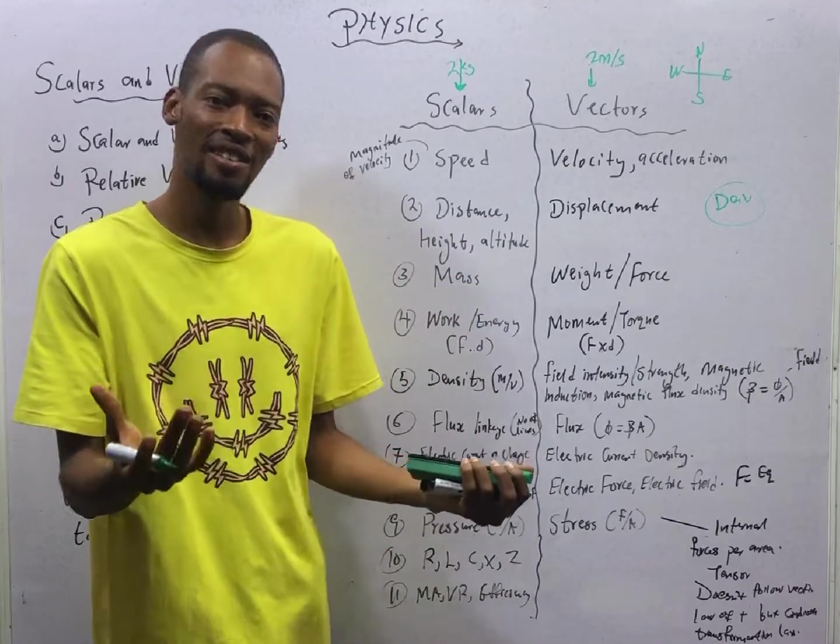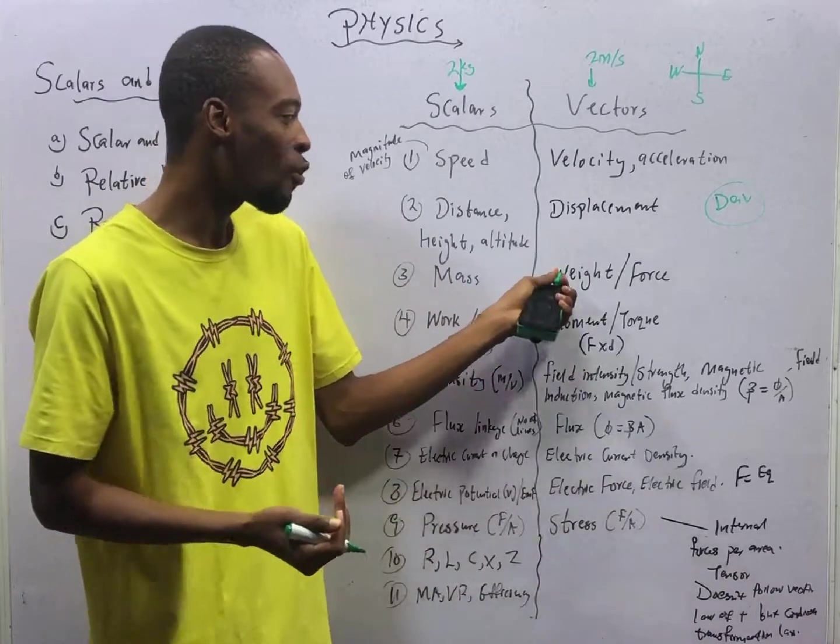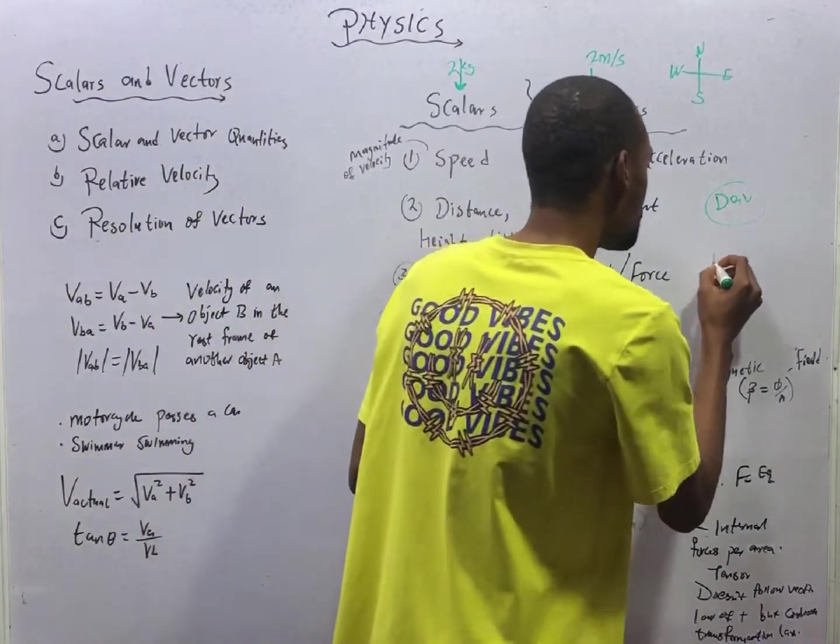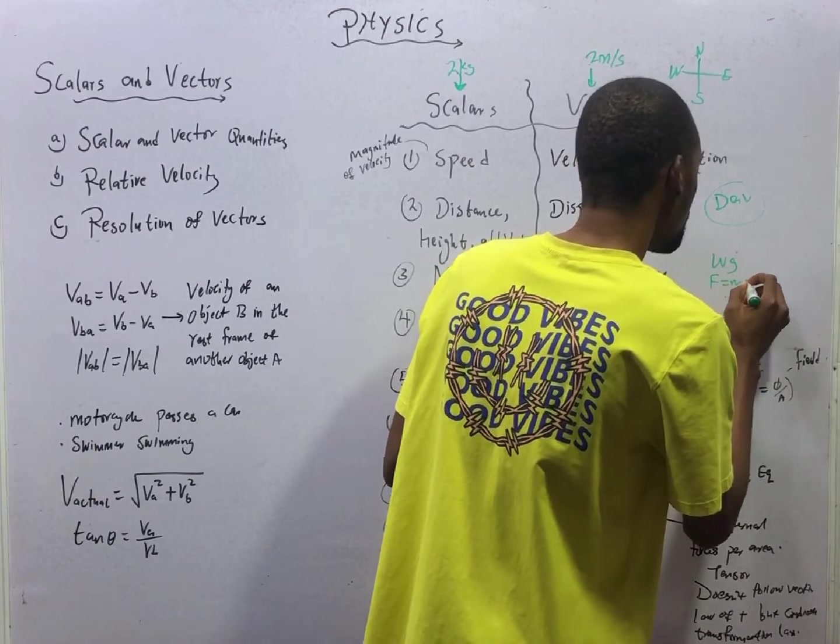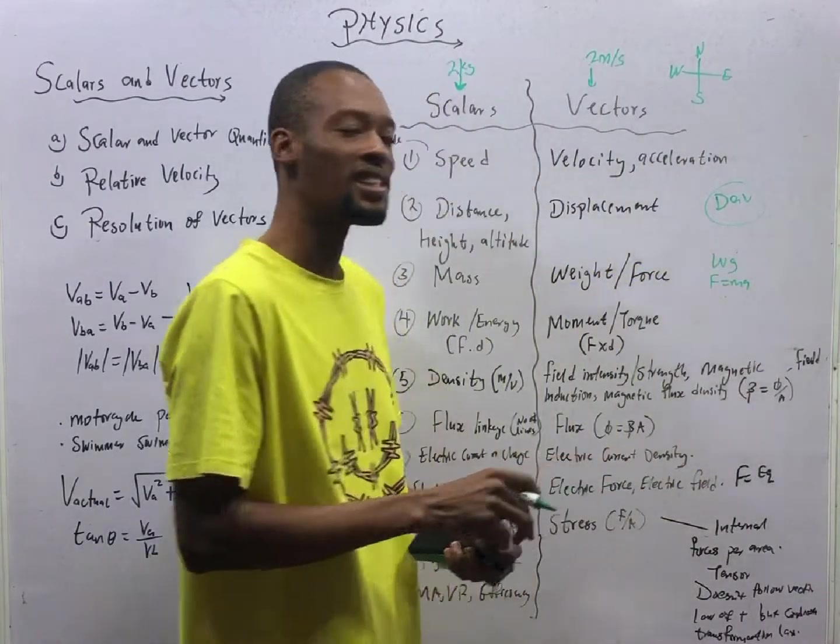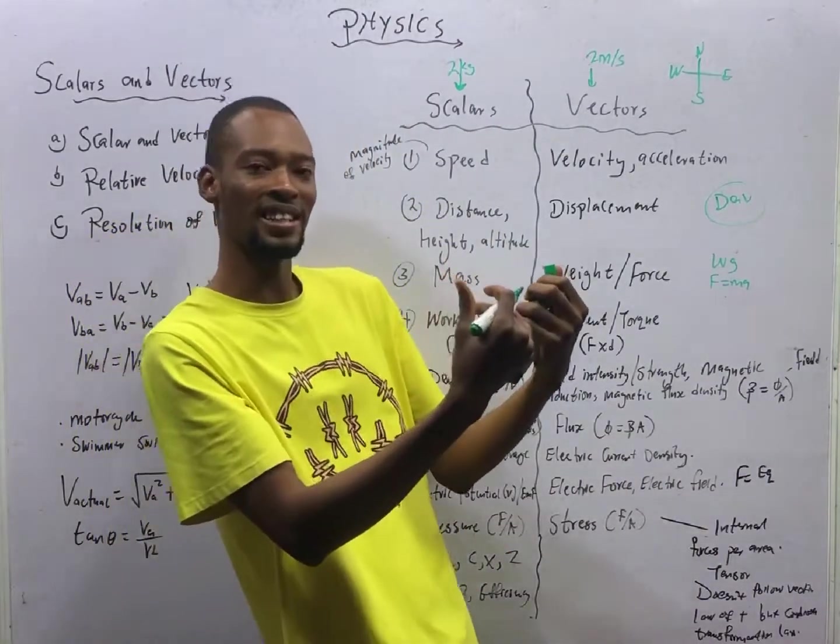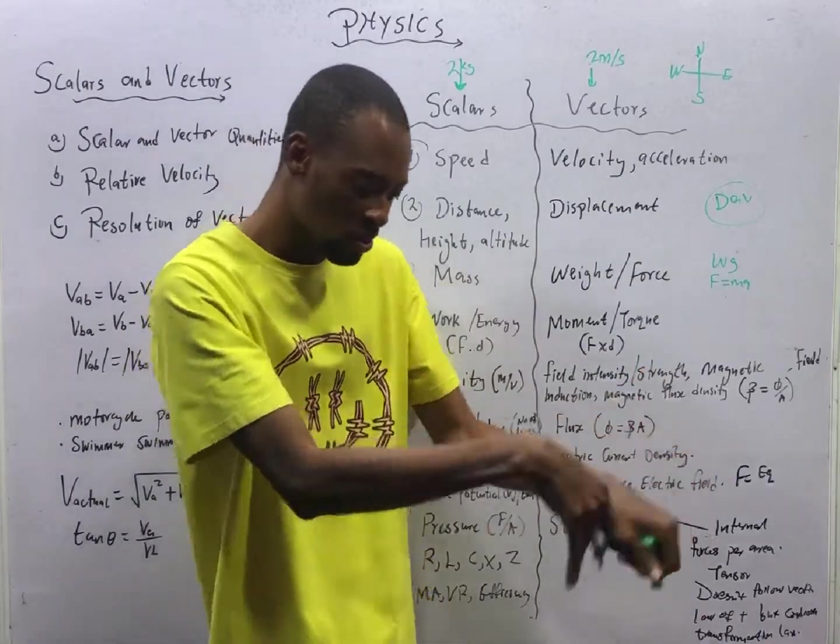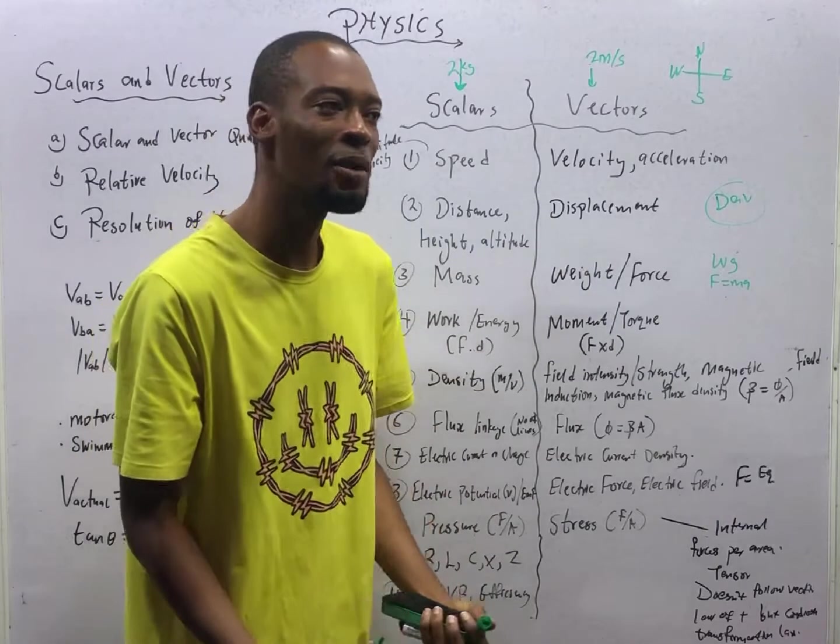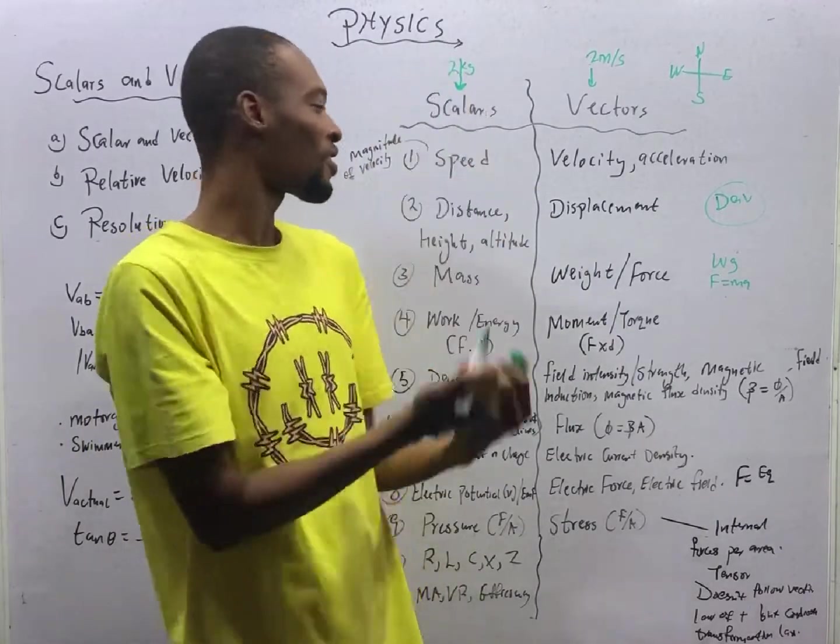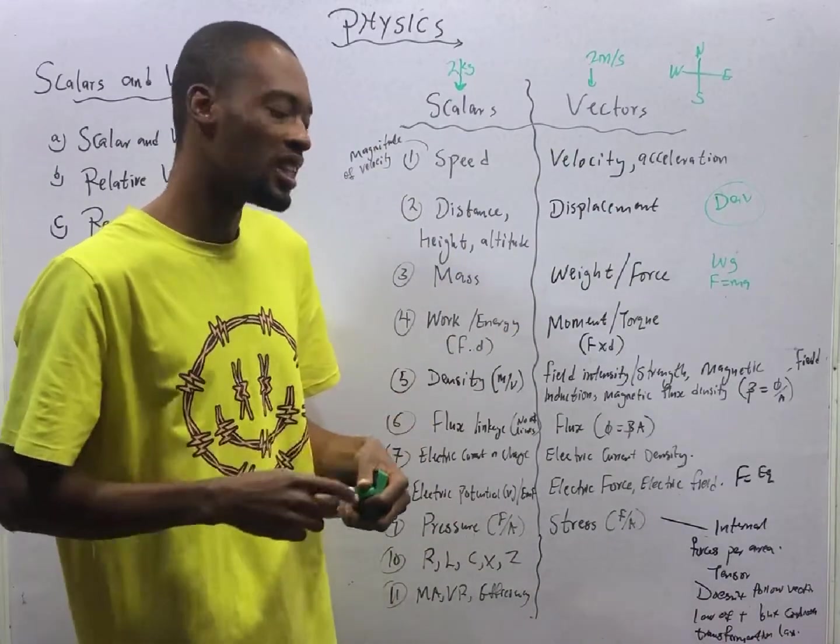Mass is a scalar quantity. The vector versions of mass are weight and force. Weight is mg. Force is ma. Weight of objects, any object, they all act downwards. They go down. And if an object is inclined, you must resolve the weight to the ground or to down. And as weight goes down, the normal reaction goes up. So weight and force are vector forms. They have magnitude. They have direction.